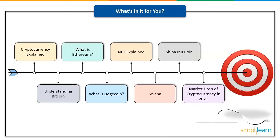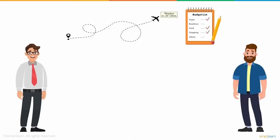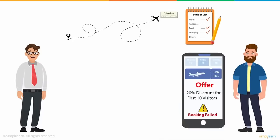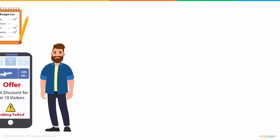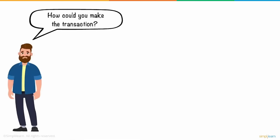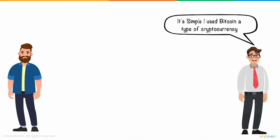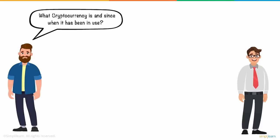Meet Frank and Daniel. One day they decide to go on a trip to Venice and make a budget list for all their expenses. They book online from a site offering discounts to the first 10 visitors. While making flight bookings, Daniel's transaction failed and he missed the offer. Frank paid quickly and became one of three lucky draw winners. Daniel asked Frank how he made the transaction, to which Frank replied: 'It's simple — I used Bitcoin, a type of cryptocurrency.' Daniel was confused and asked what cryptocurrency is and since when it has been in use.